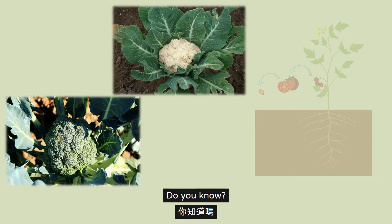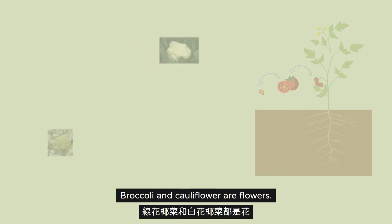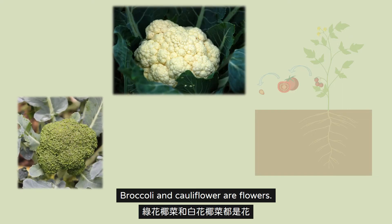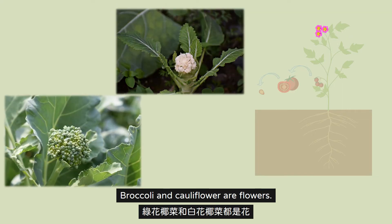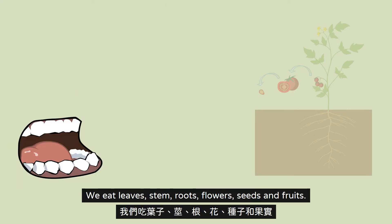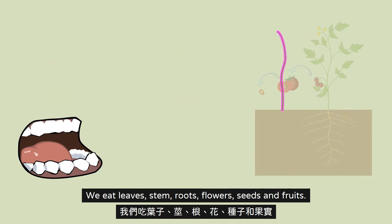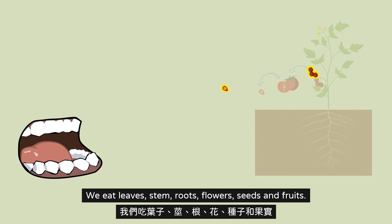Do you know? Broccoli and cauliflower are flowers. We eat leaves, stem, roots, flowers, seeds and fruits.